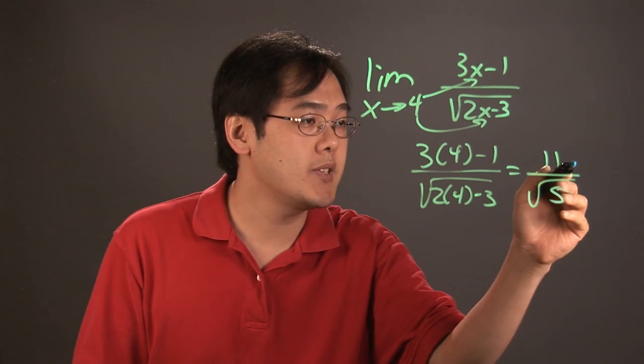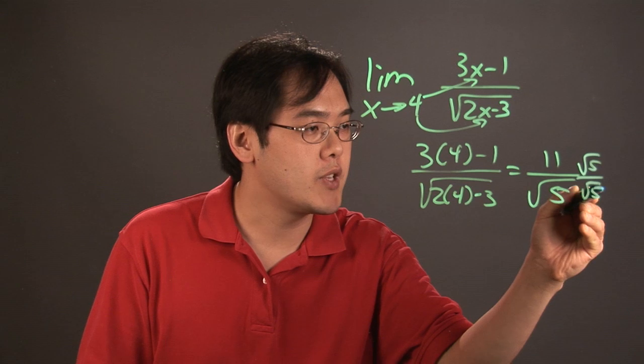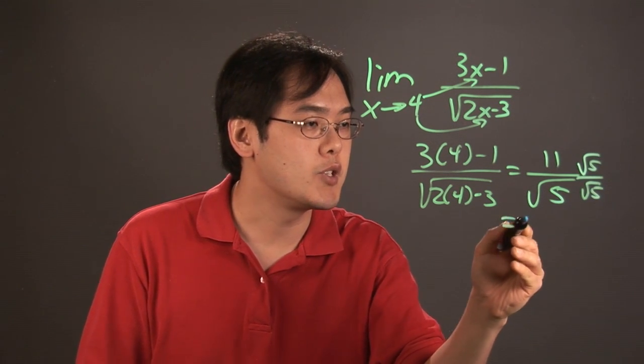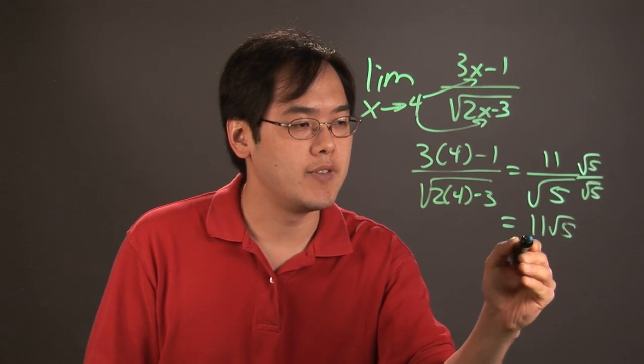Now, in this particular case, you may need to rationalize to express your final answer appropriately. So this would be 11 square root of 5 over 5.